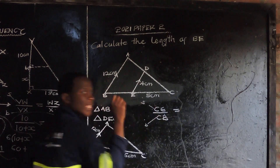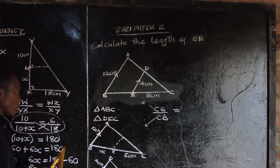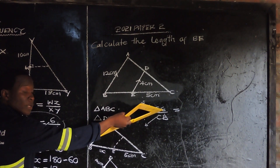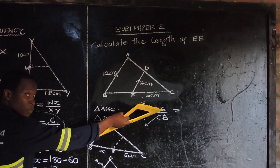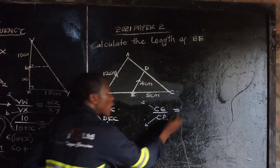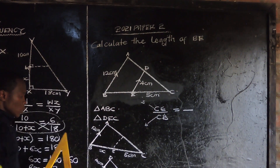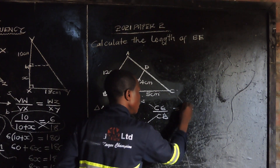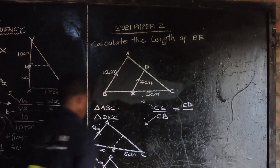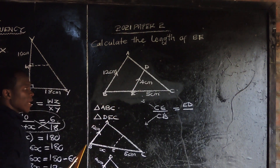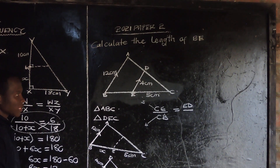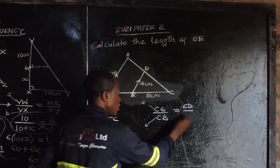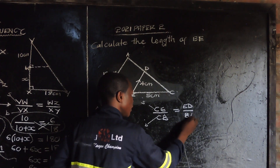We also need to find another pair of corresponding sides. CE is from the small one, which is our numerator. So if our numerator is a side from the small triangle, which side will it be? ED. And what is its corresponding side from the big triangle? BA. Very good.